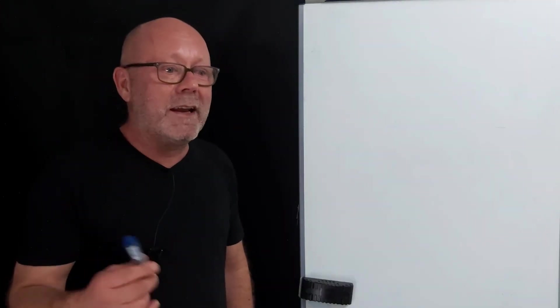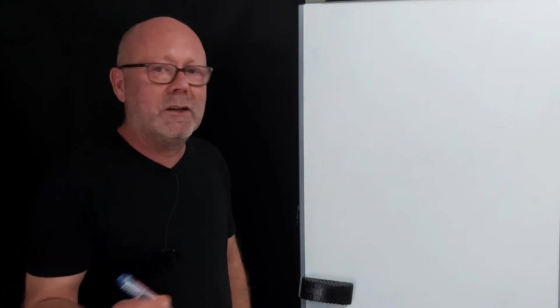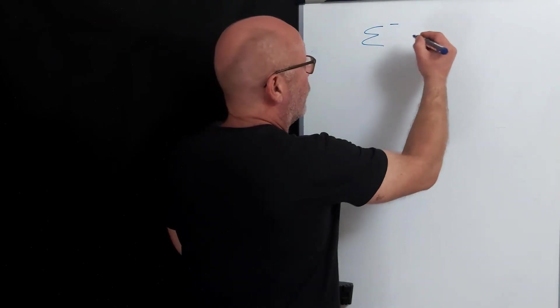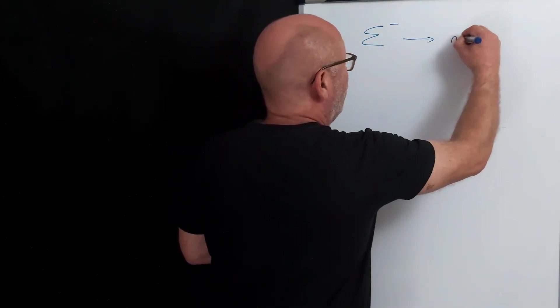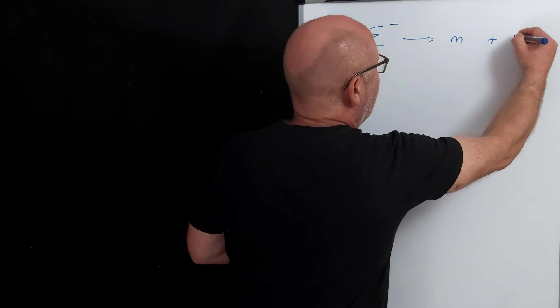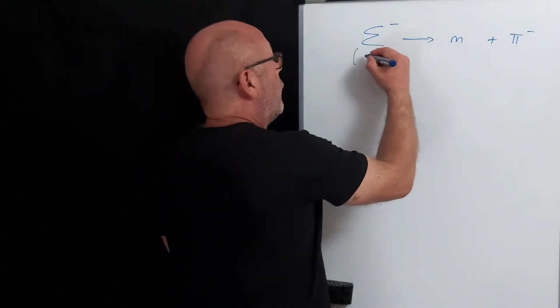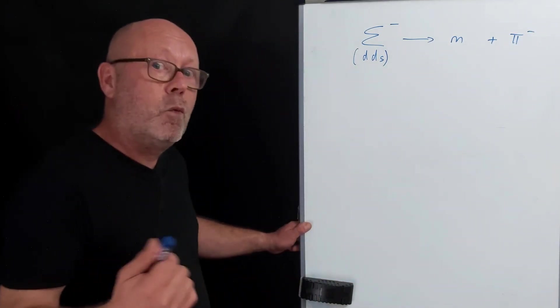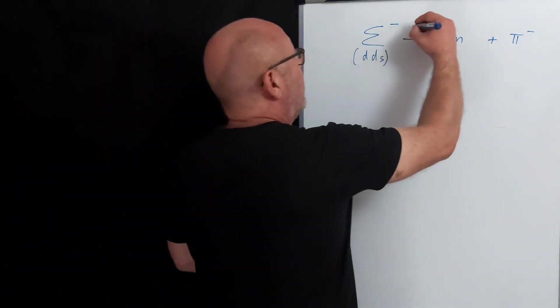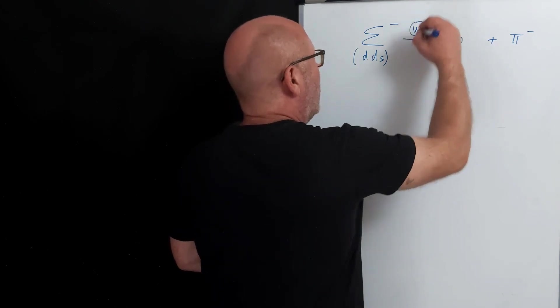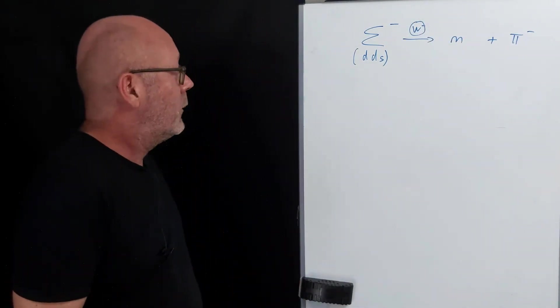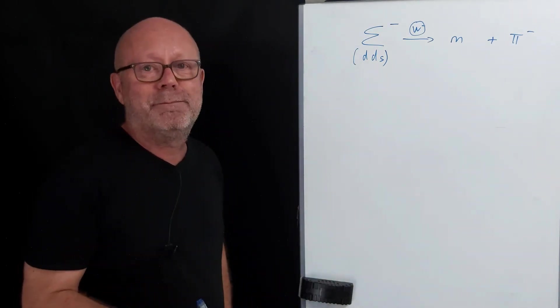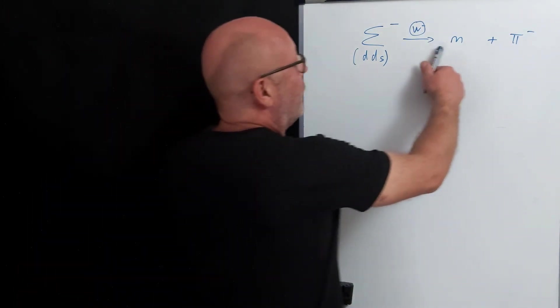The next reaction is based on an exercise I found in a textbook and I found it quite interesting. You start with a σ- baryon, you get a neutron and a π-. They give you the composition of the σ-. They also tell you that it is a weak force that is involved and that it is a W- boson which is mediating the force. Draw the Feynman diagram, pause the video, give it a shot.